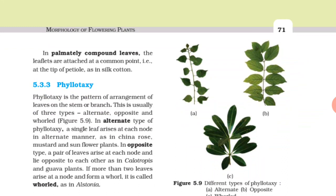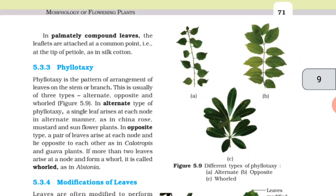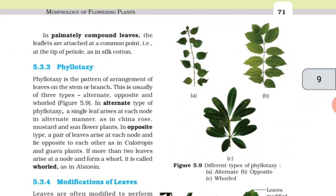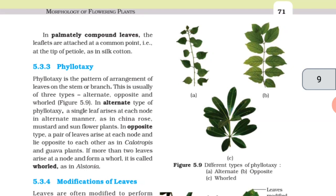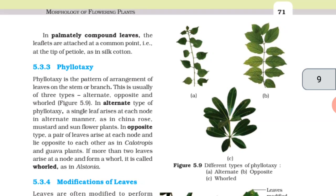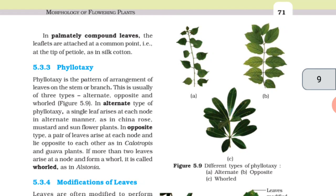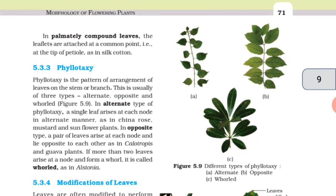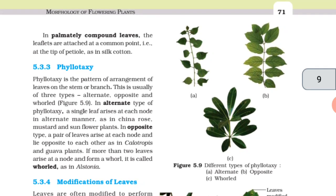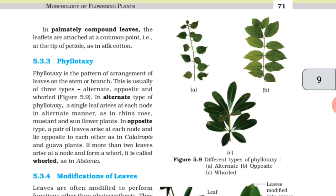Phyllotaxy. Phyllotaxy is the pattern of the arrangement of leaves on the stem or branch. This is usually of three types: alternate, opposite and whorled. In alternate type of phyllotaxy, a single leaf arises at each node in alternate manner as in china rose, mustard and sunflower plants. In opposite type, a pair of leaves arise at each node and lie opposite to each other as in Calotropis and guava plants. If more than two leaves arise at the node and form a whorl, it is called whorled as in Alstonia.